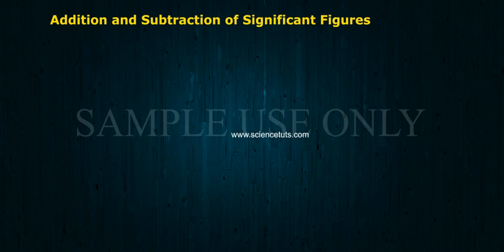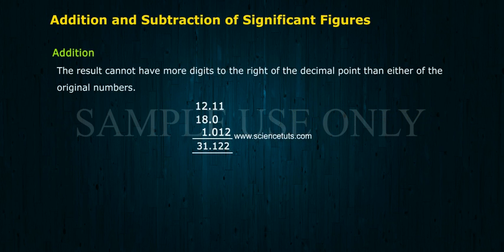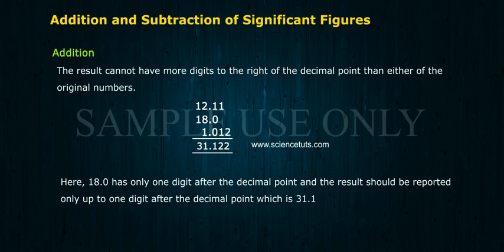Addition and subtraction of significant figures: The result cannot have more digits to the right of the decimal point than either of the original numbers. Example: 12.11 + 18.0 + 1.012 = 31.122. Here, 18.0 has only one digit after the decimal point, so the result should be reported only up to one digit after the decimal point, which is 31.1.